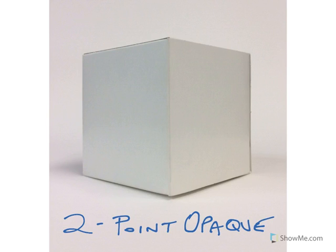Let me show you an actual two-point opaque box. When we look at a two-point opaque box, the first thing we'll notice is the front corner is the area closest to us. Everything else moves away. This is the front corner and it is a vertical.